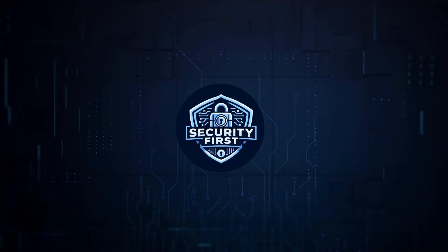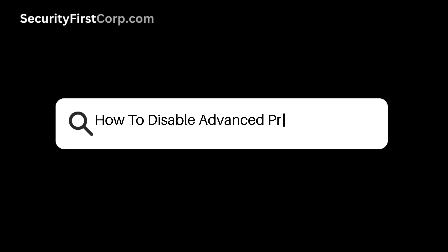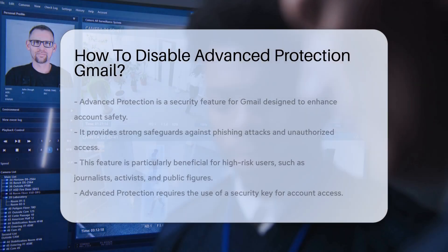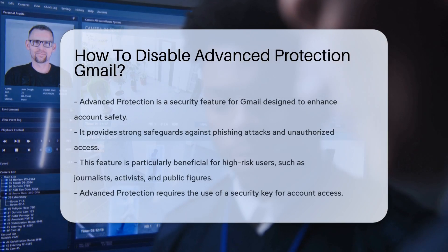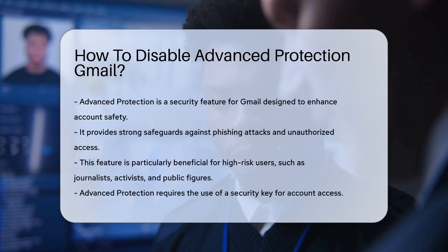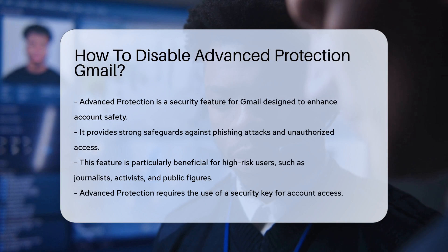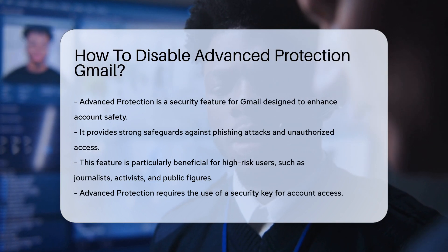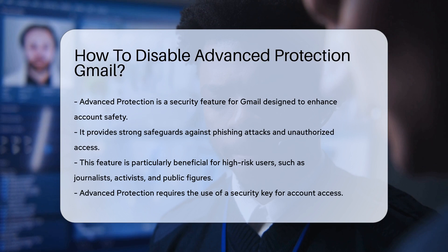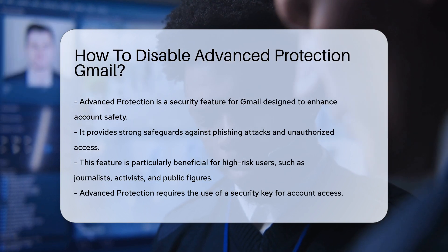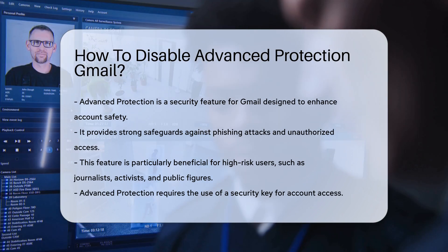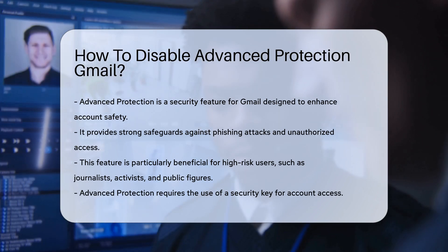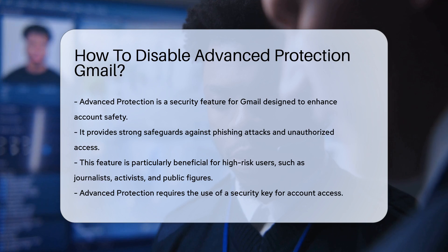Security First Corp. Safety through knowledge. How to disable Advanced Protection Gmail? Advanced Protection is a feature designed to enhance security for Gmail accounts. It provides robust safeguards against phishing and unauthorized access. However, some users may find it overly restrictive and seek to disable it. Understanding the process requires careful consideration of the implications.